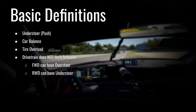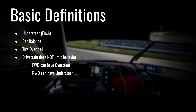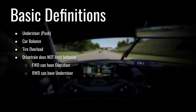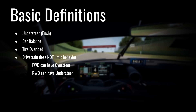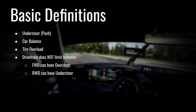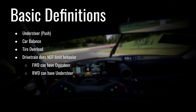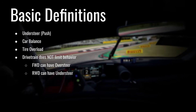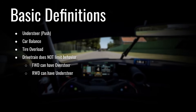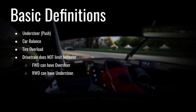First, let's go over some basic definitions. Understeer, or push, is when the front tires lose grip before the rear tires, making it so you're unable to turn as sharp as you would normally. When I talk about car balance, I mean the balance of grip in the front versus grip in the rear. Tire overload is when the tires exceed their grip potential and start to slip. It's a common misconception that front-wheel drive cars can only have understeer or rear-wheel drive cars can only have oversteer — both cars can have the same effects, both oversteer and understeer.